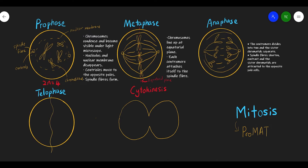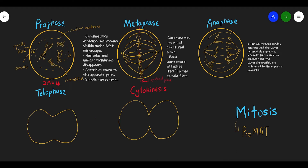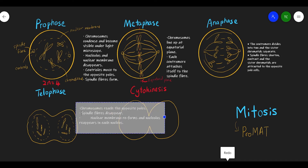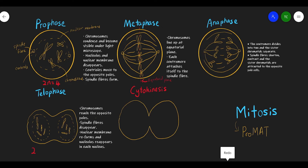Next is telophase. In this phase the cell is ready to split into two, but hasn't split yet. We draw the nuclear membrane as a dotted line because it is starting to reform. There are four chromosomes on the left and four on the right. The chromosomes reach the opposite pole, the spindle fiber disappears, the nuclear membrane reforms, and the nucleus reappears in each half.